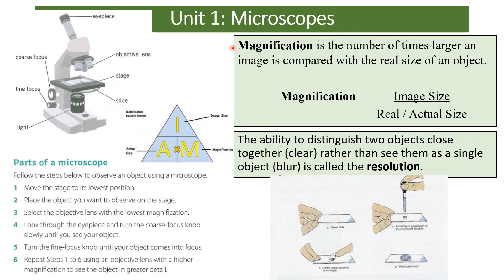Magnification is the number of times larger an image is compared to the real size of the object. For example, if an ant is 1 mm in size and the image under the microscope is 10 mm, you've magnified it 10 times. That is different from resolution. Resolution is the ability to distinguish between two objects that are close together — basically the clarity of an object. You may be asked to calculate magnification using the IAM equation: image divided by actual size gives magnification; image divided by magnification gives actual size. You need to memorise and rearrange this equation for GCSE.